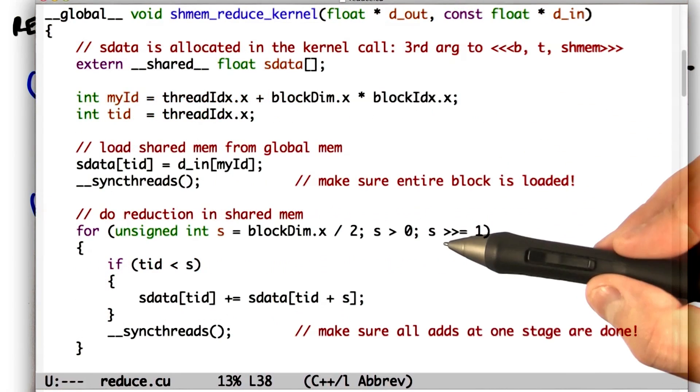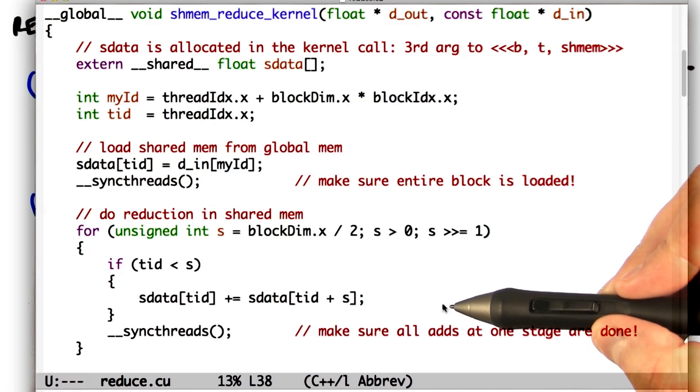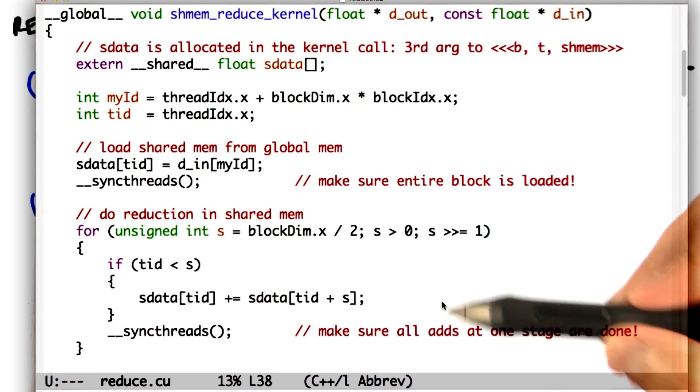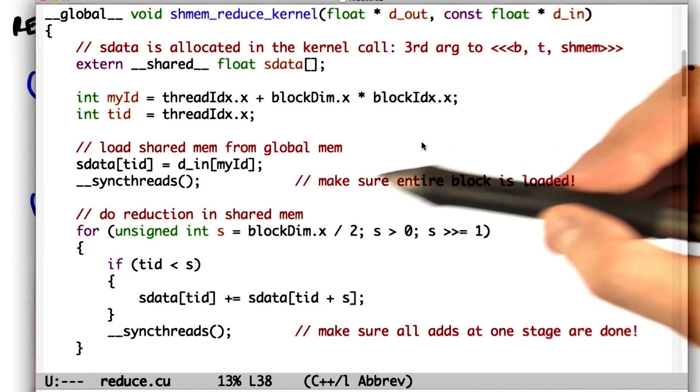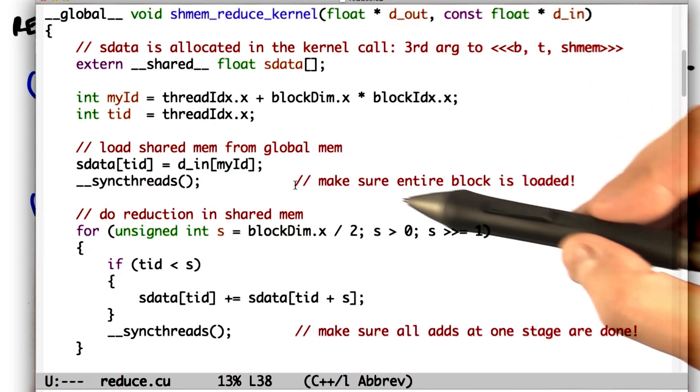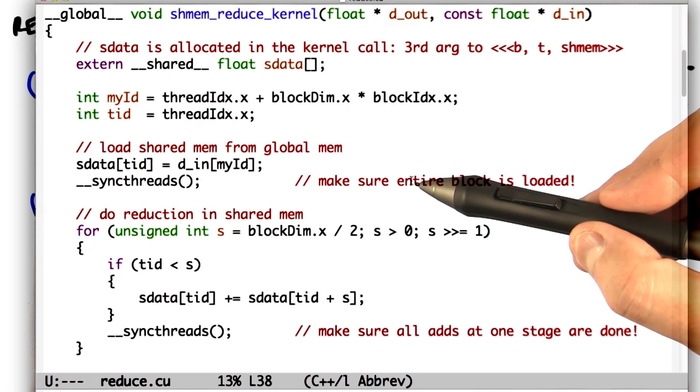It's going to look very similar. In this kernel, we'll have the exact same loop structure. What's going to be different, though, is this little part right here. We have to first copy all the values from global memory into shared memory, and that's done with this little block.